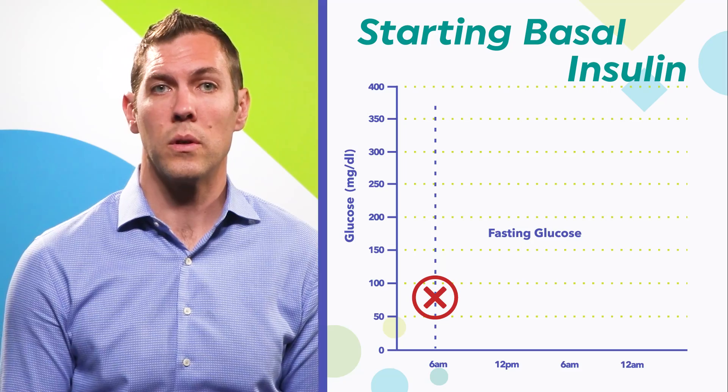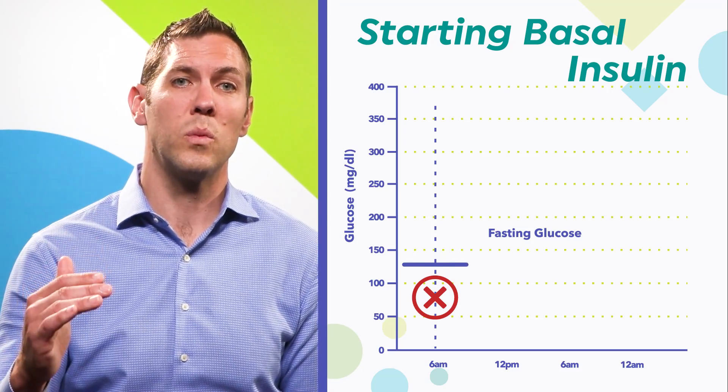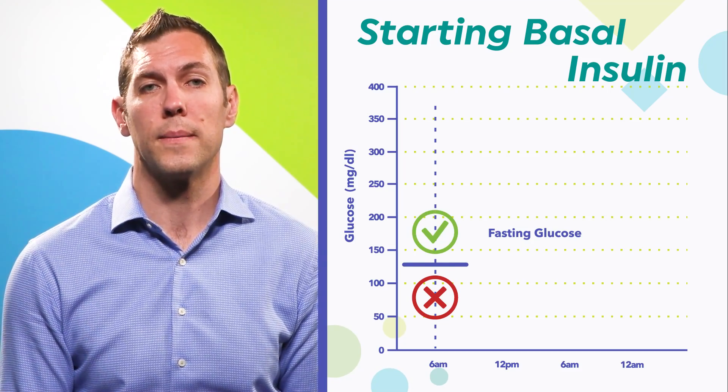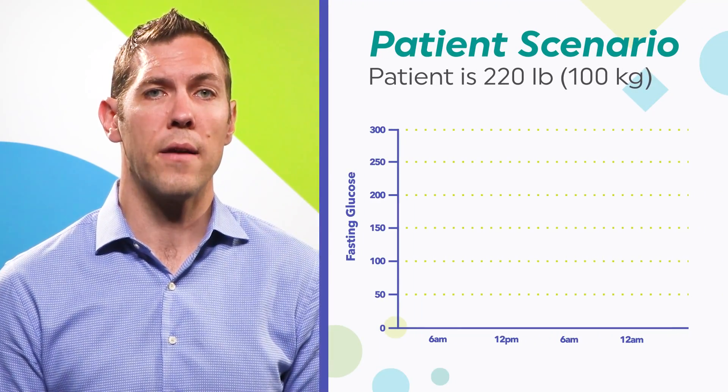Keep in mind it's not a good idea to start basal insulin if a patient's fasting glucose is less than 130, as this could lead to hypoglycemia. If the patient's fasting glucose is in range and their A1C is still above goal, a medication that targets high postprandial blood sugars would be a better option.